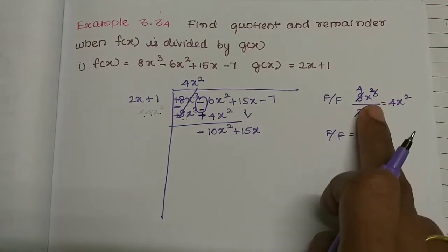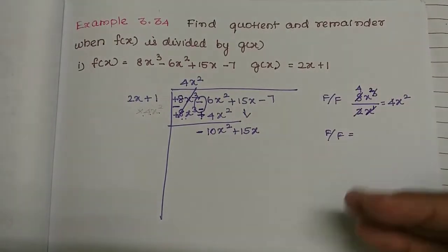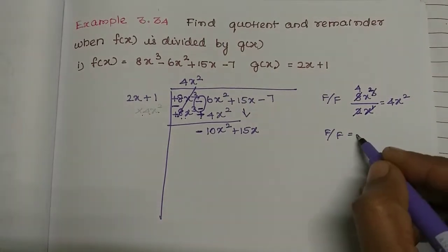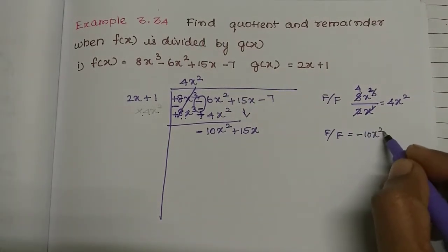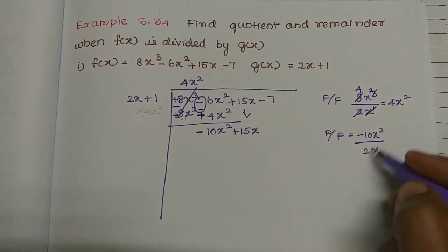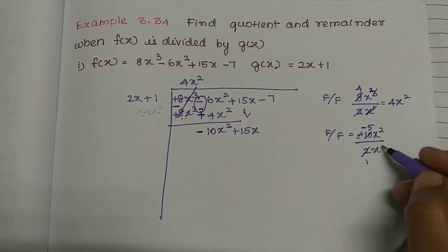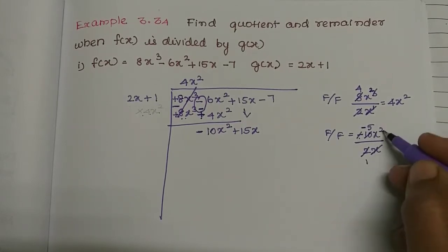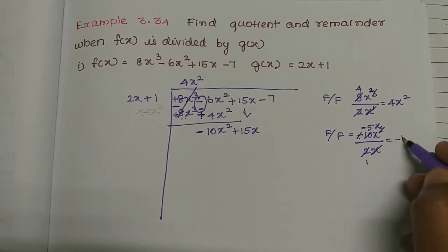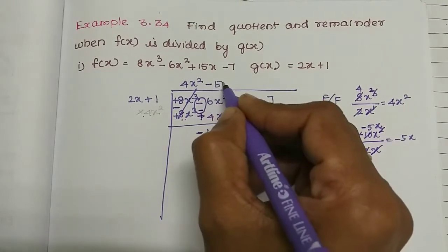First term divided by first term. We take minus 10x squared. This is plus 2x, and 2x is equal to the divisor's first term. So 2 fives are 10, and x into x gives x. This is equal to minus 5x. So minus 5x is the next quotient term.